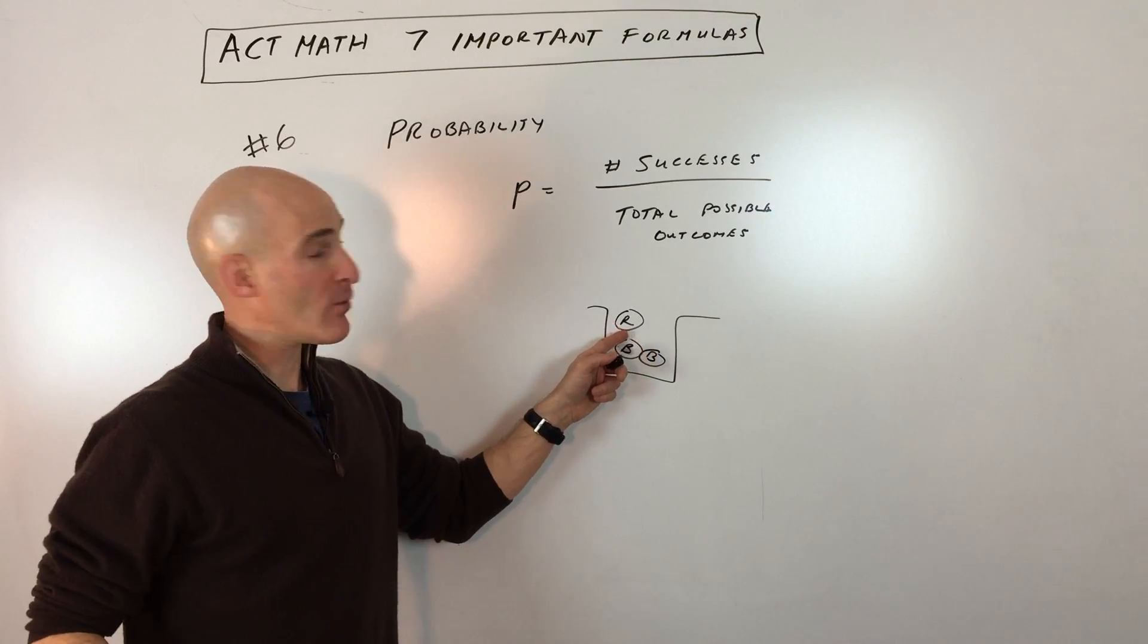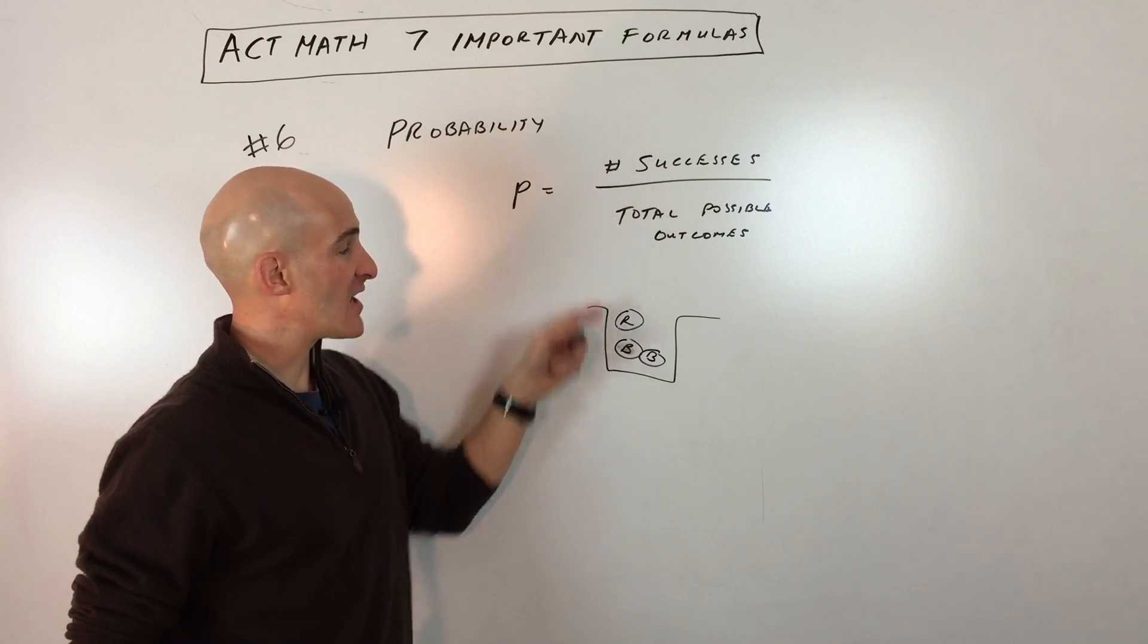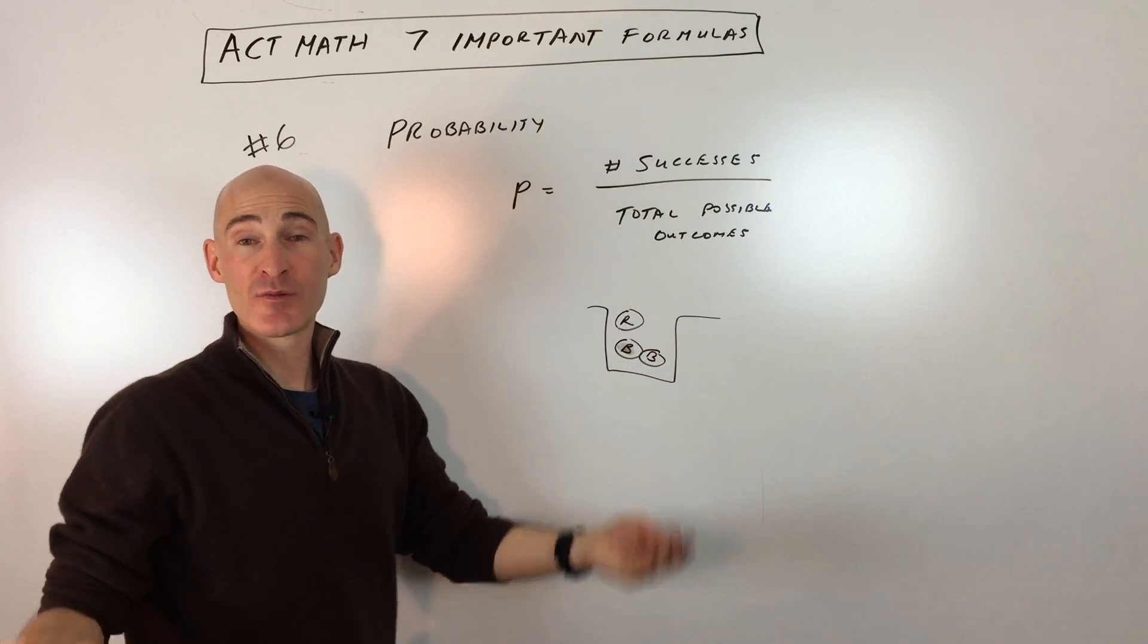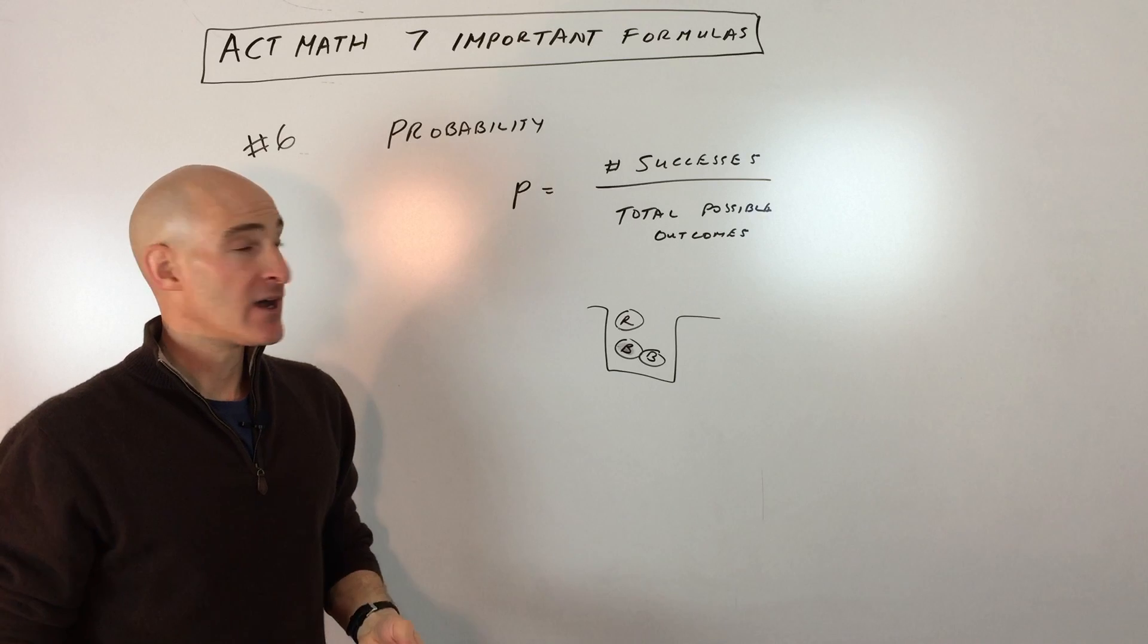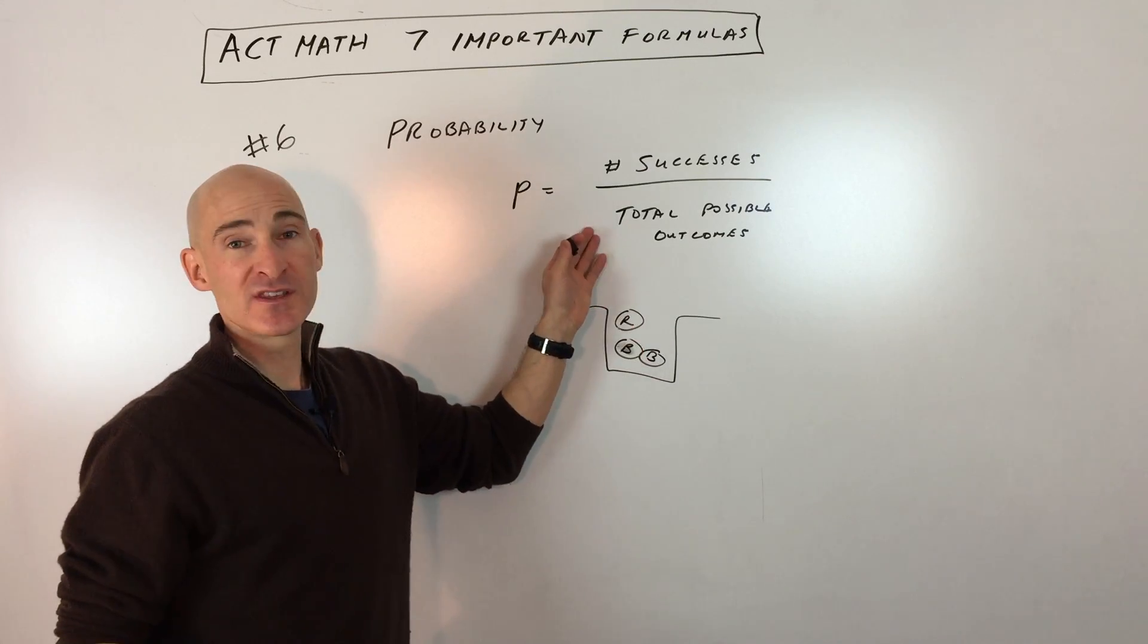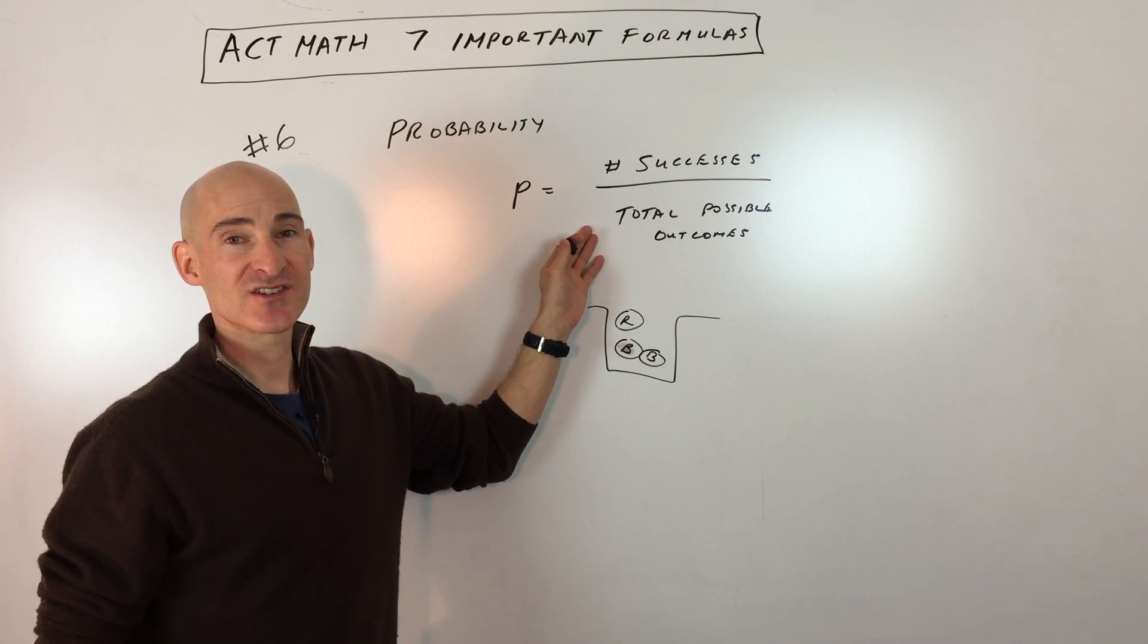And you say, what's the probability I pick a red marble? Well, it's one chance, one success out of three possible, the probability would be one third. So this is just a very basic example. But this is a good formula that you want to know for the math section of the ACT.